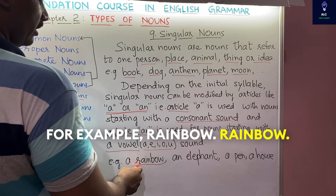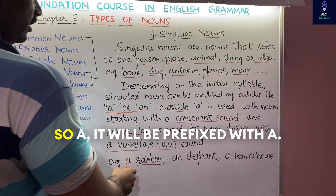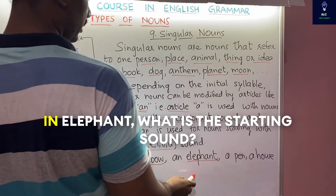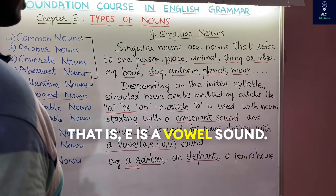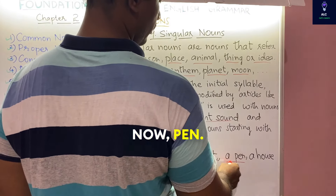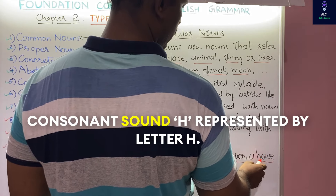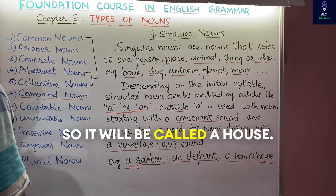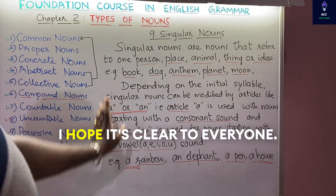For example, rainbow starts with R — a consonant — so it is 'a rainbow.' Elephant starts with E — a vowel sound — so it is 'an elephant.' Pen starts with a consonant sound, so 'a pen.' House starts with H — a consonant — so it is 'a house.' These are the key points to remember about singular nouns.